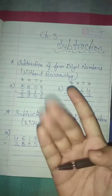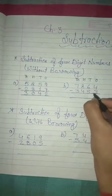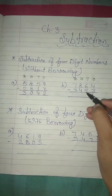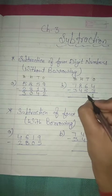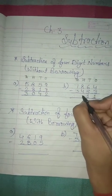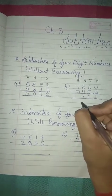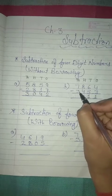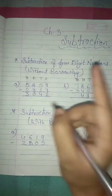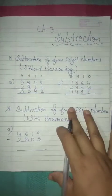Means 4 minus 3 is equal to how much? 1. So write down here 1. Very good students. Then 6 minus 5 is equal to — tell me. Correct, 1. And 8 minus 4 is equal to? Tell me fast. Yes, 4. So write down here 4. And 7 minus 3? Tell me. Correct, 4. So write down again: 4. Very good students.